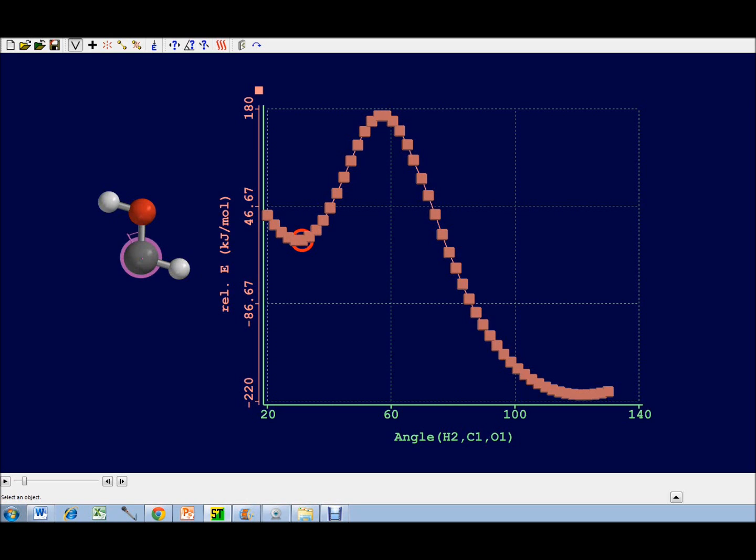Here we have the results of the PM3 semi-empirical calculation using the Spartan software for the reaction of hydroxymethylene shown here. In hydroxymethylene, one hydrogen is attached to the oxygen, the other hydrogen to the carbon. The reaction forms formaldehyde shown here, and in formaldehyde, both hydrogens are bound to the carbon.